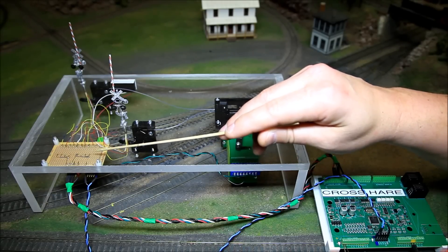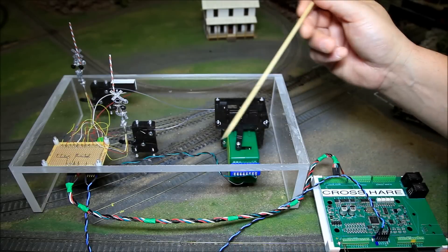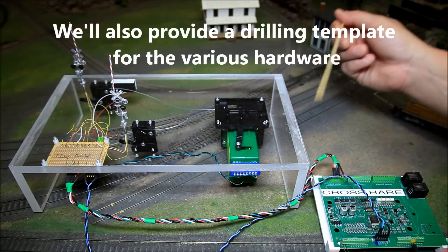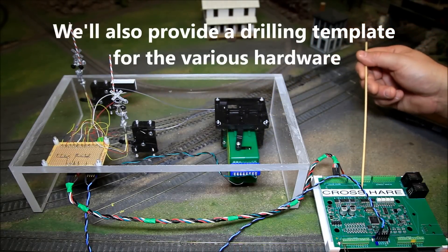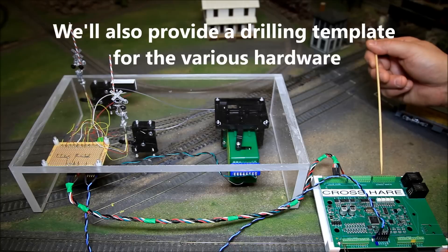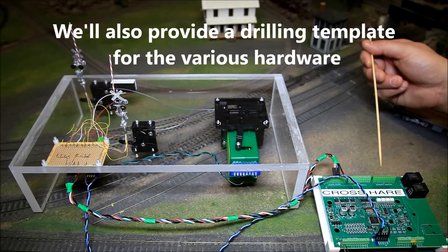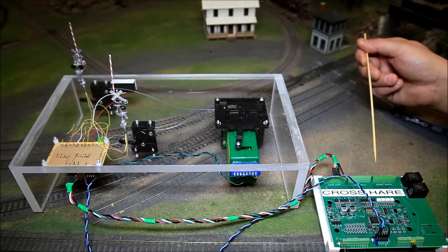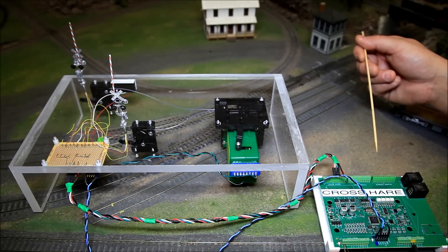Also included is the output for the speaker going to the tortoise. Included in that kit is going to be the crosshair and eight sensors for track detection.